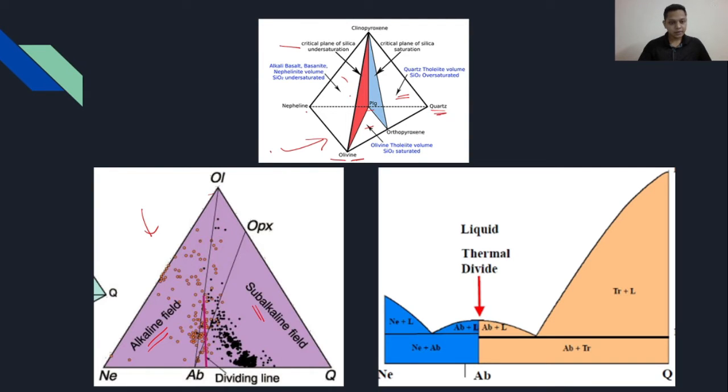The olivine-albite line, or close to this line, exists a dividing line. This dividing line is actually dividing these two fields: one is entirely the alkaline field and one is the subalkaline field.